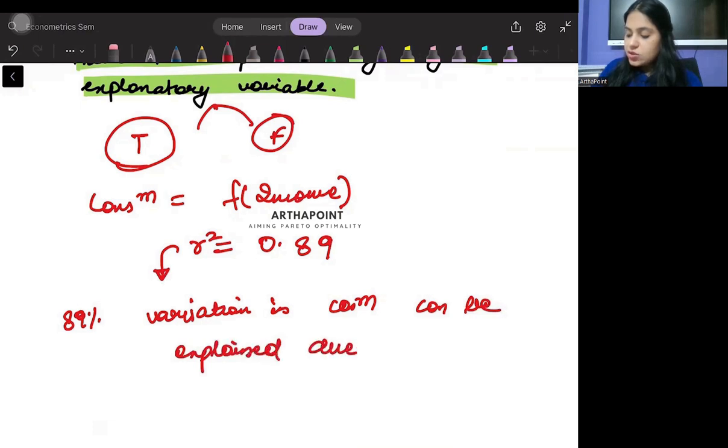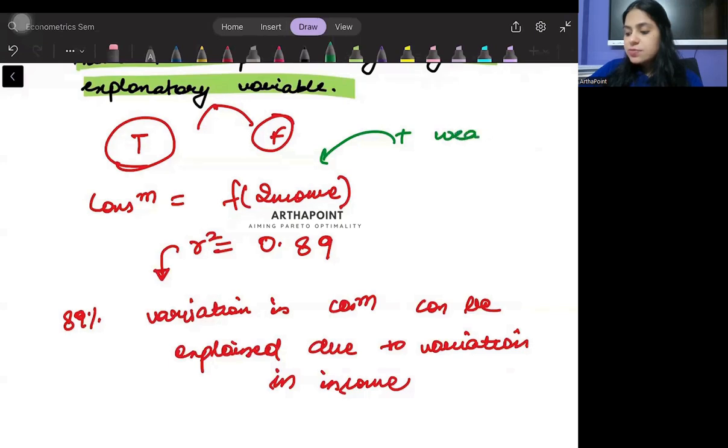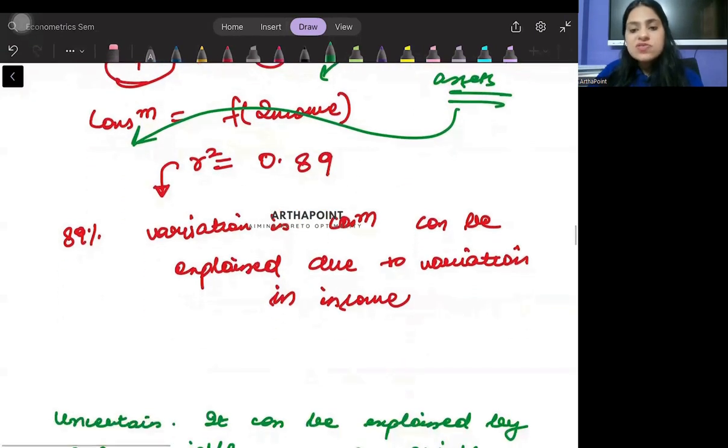Now you may want to go ahead and argue with me that there is an extra variable of wealth or the assets of parents which may affect my consumption. Well, it may, but a lot of times what we want to do is we want to keep the model simple.